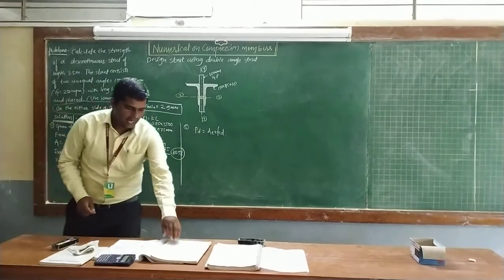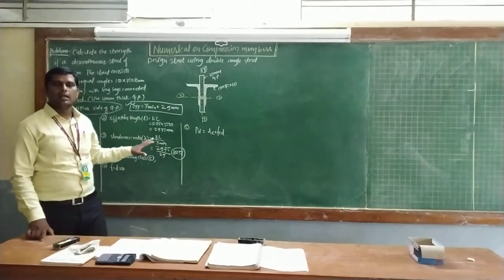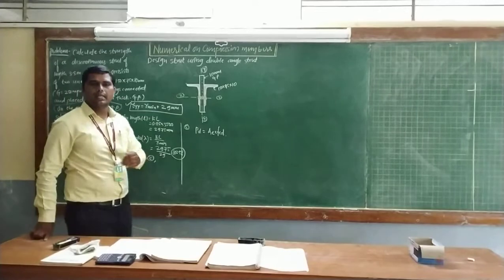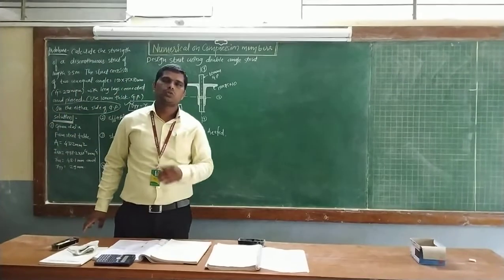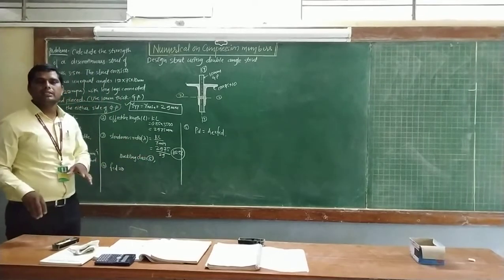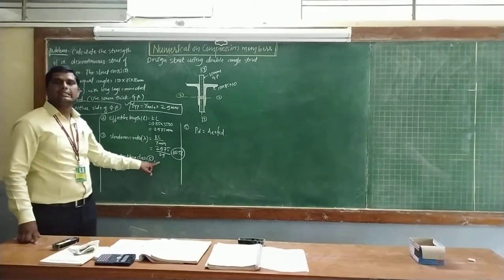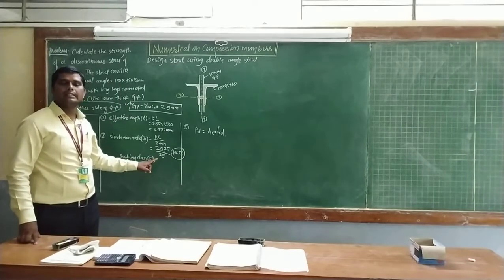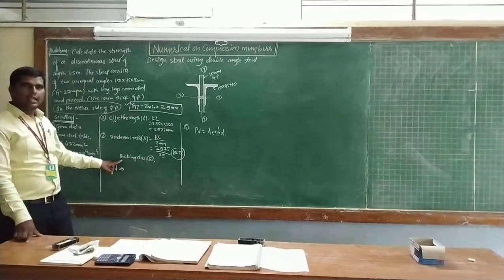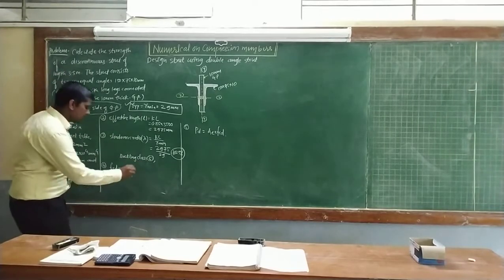If you go through the IS code, page number 44, table number 10, IS 800-2007, all angle sections—it may be a single angle section, double angle section, channel section, T bar, or solid sections—for all sections mentioned in the second row of table number 10, the buckling class is C. Here there is a clear definition in table number 10 of page number 44. So for angle sections, buckling class C means refer to table number 9.